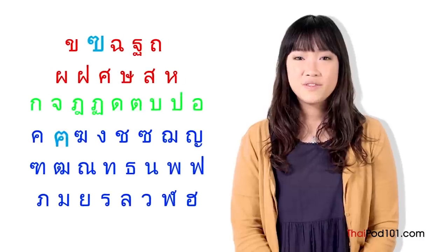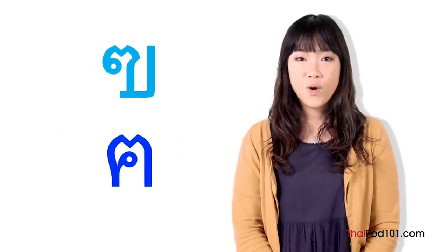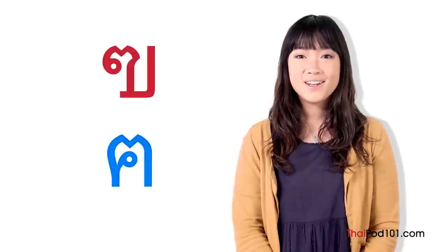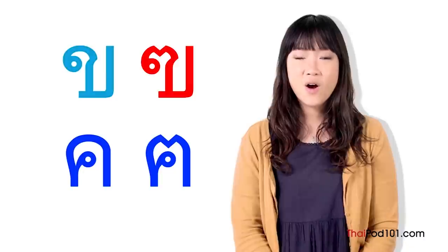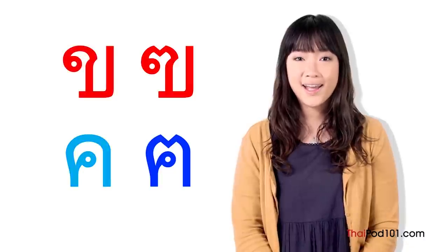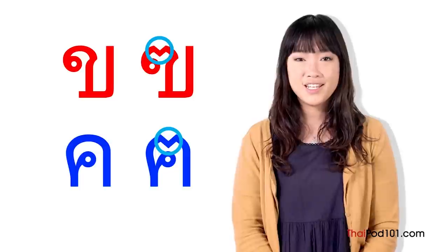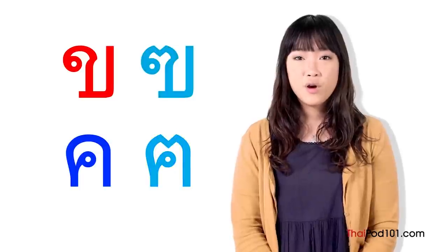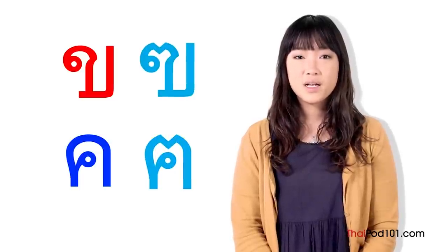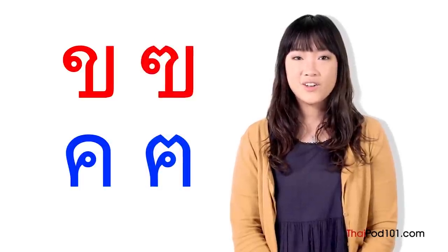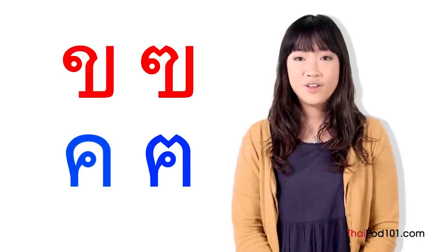The names of these letters are KOKUAT and KOKON. They look just like the consonants KOKAI and KOKAI with an extra indentation drawn on the top of each. Both of these letters make the same K sound as KOKAI if they were used in any words.